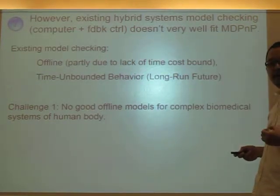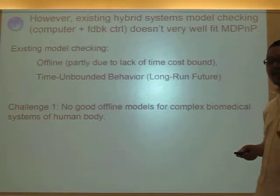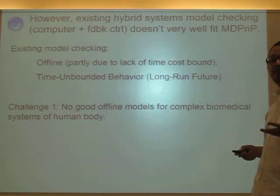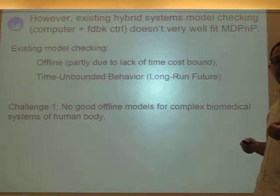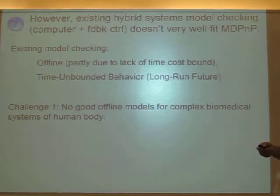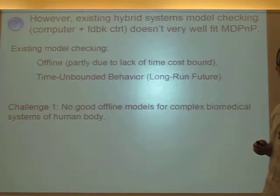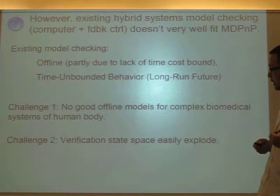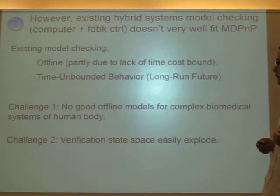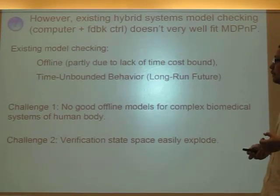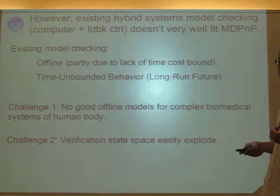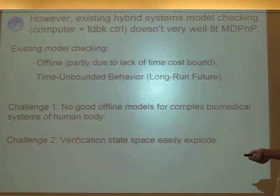Take the blood oxygen level for example. It is very difficult to give offline the differential equation that describes the change of the blood oxygen level of the patient, because this vital sign is affected by too many factors — the patient's age, gender, weight, and even emotional mood can affect how blood oxygen level changes in the future. So it is practically impossible for us to give this differential equation offline. The second challenge is that the verification state space can easily explode. This is already a common problem for model checking, and when dealing with the more complex biochemical system of the human body, this problem becomes even more eminent.